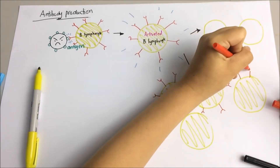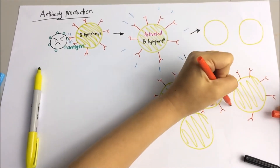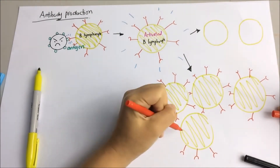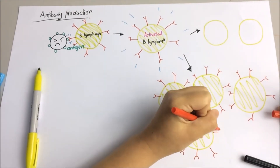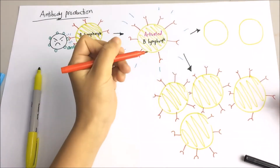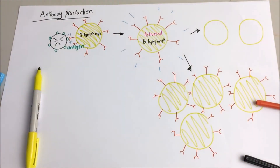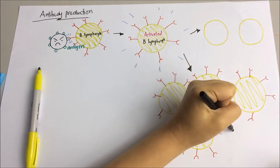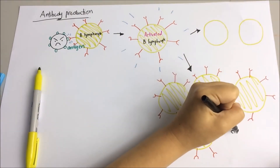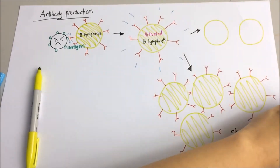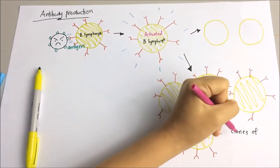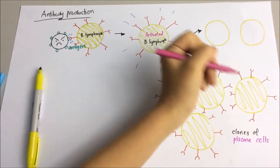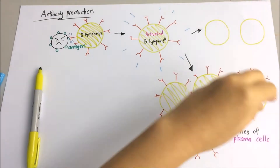These plasma cells will produce a type of protein called antibody. These antibodies have a shape specific to the shape of the antigen, so that they can bind to the antigen on the surface of the virus.